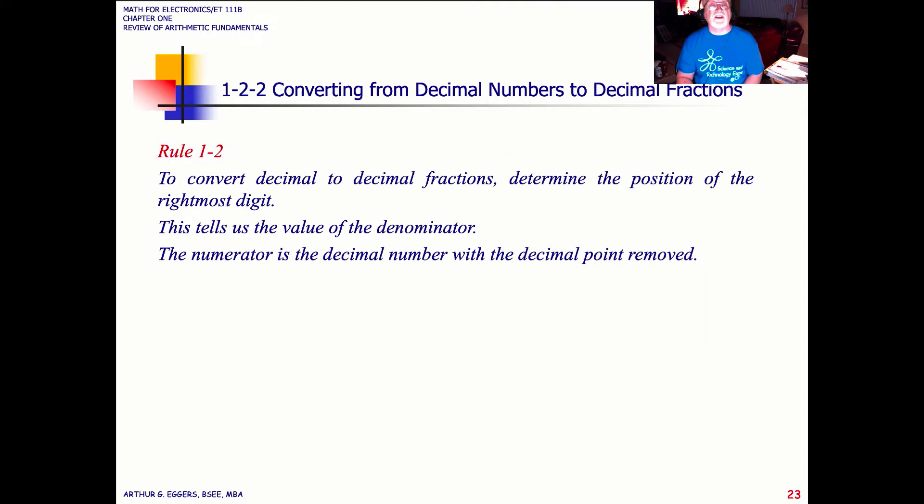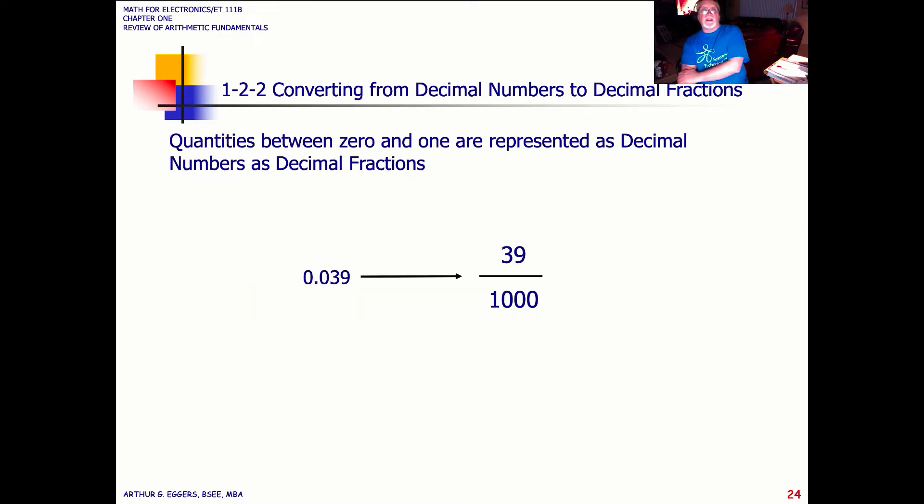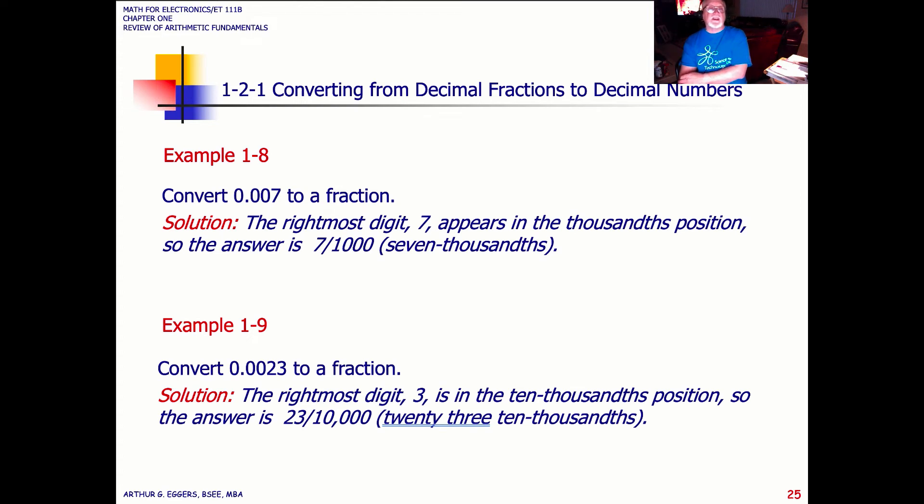Rule two then says convert decimals to decimal fractions, determine the position of the rightmost digit. That becomes the value of the denominator. So when we look at this, the rightmost digit in this case is a 9. It's in the thousandths position, so this becomes 39 thousandths, whether you handle it as a decimal fraction or a decimal number. Your text has lots of examples. I suggest you go through the examples as you are reading through your text and make sure you understand thoroughly what this example is trying to teach you. You can learn everything you need to know by working through the examples and then later working through the problems.